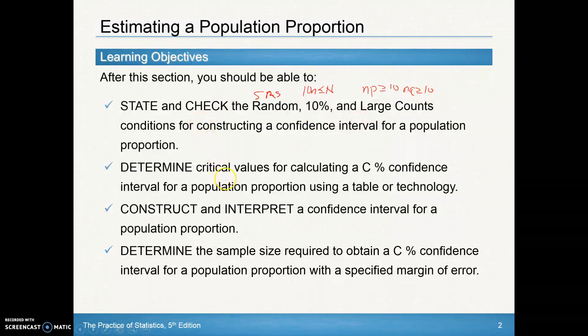We'll determine the critical values for calculating a C% confidence interval for a population proportion using table A or technologies, like our TI-Inspire calculator. We'll construct and interpret a confidence interval for a population proportion. And we'll determine the sample size required to obtain a C% confidence interval for a population proportion with a specified margin of error.